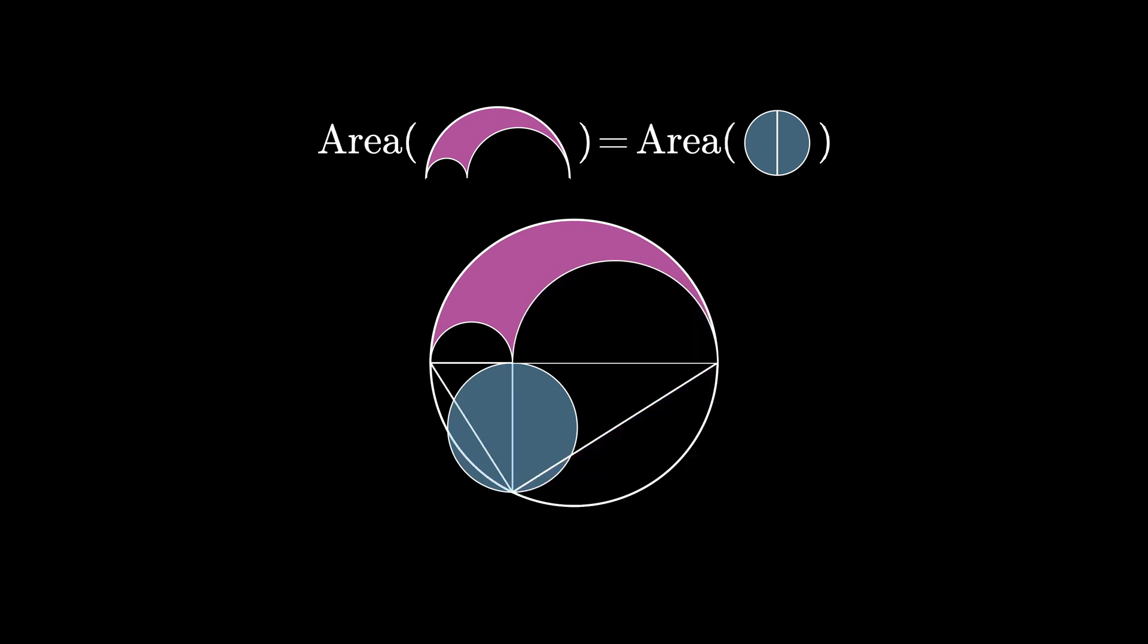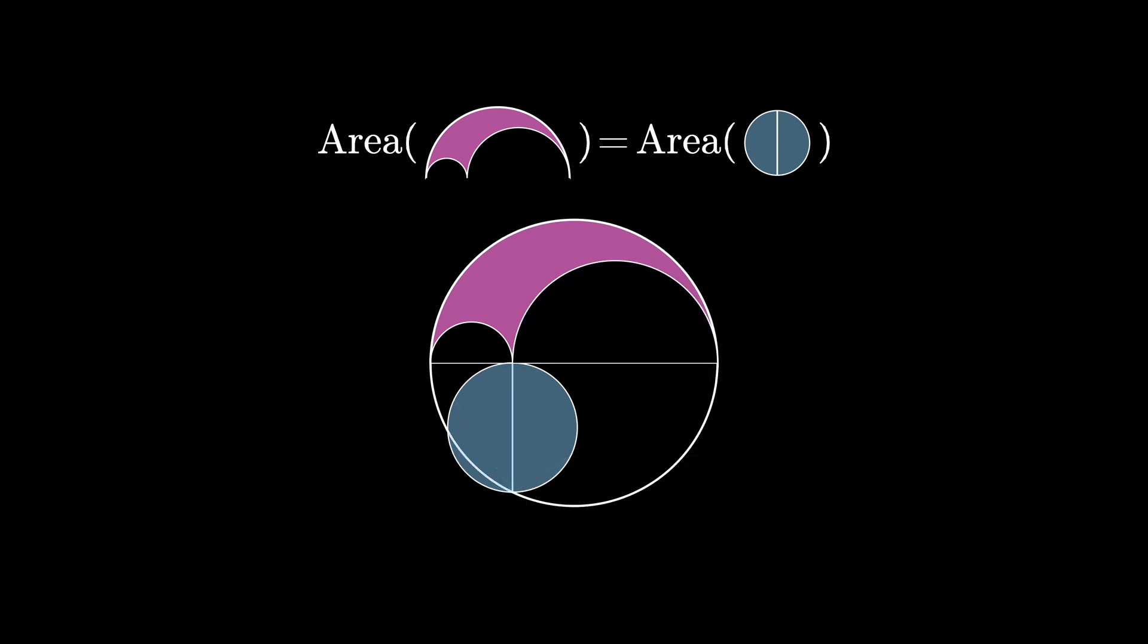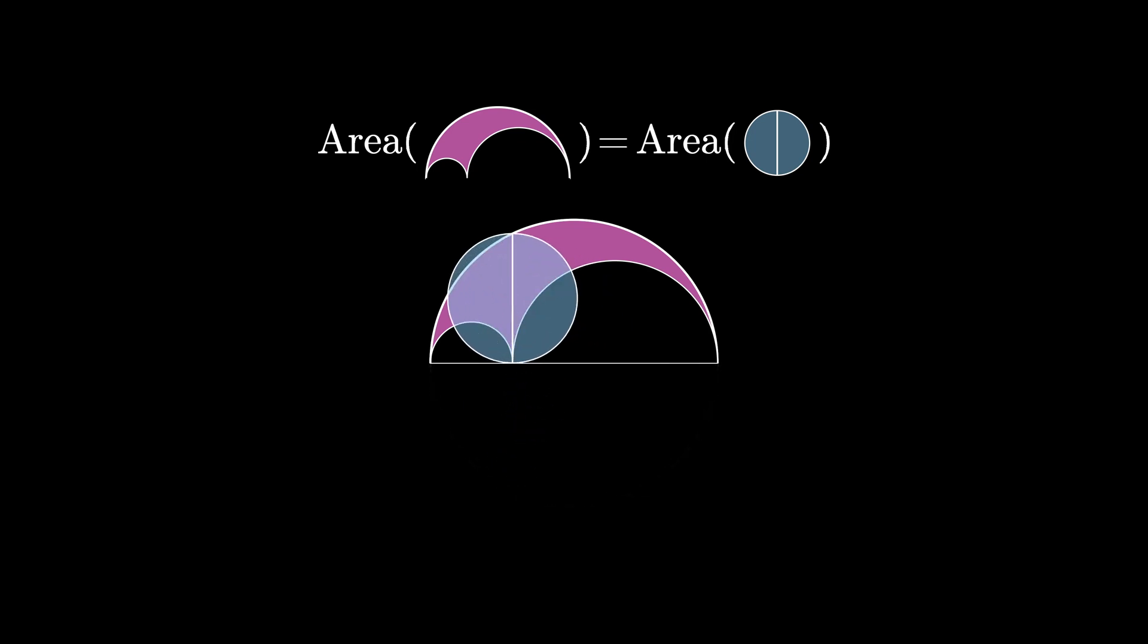When we do that we see that the only area surviving is the pink area of the arbelos and the blue area corresponding to the circle whose diameter is the semicord.